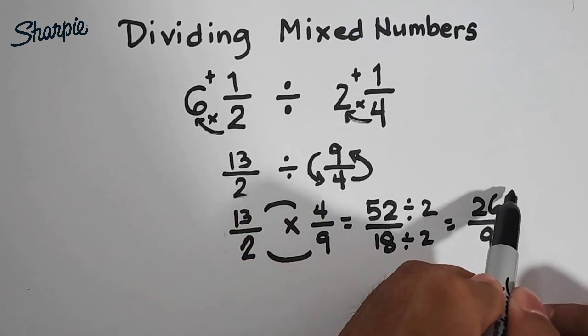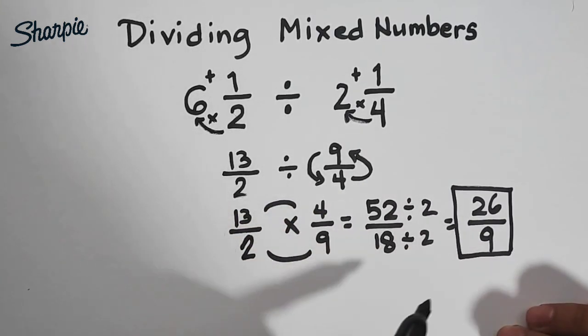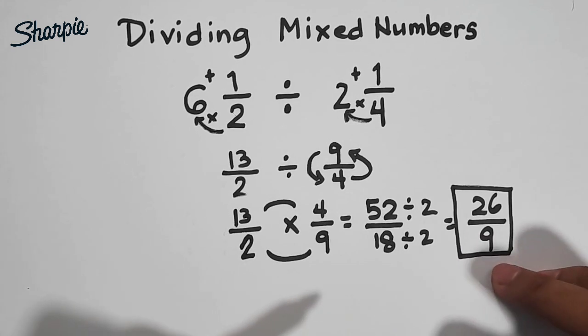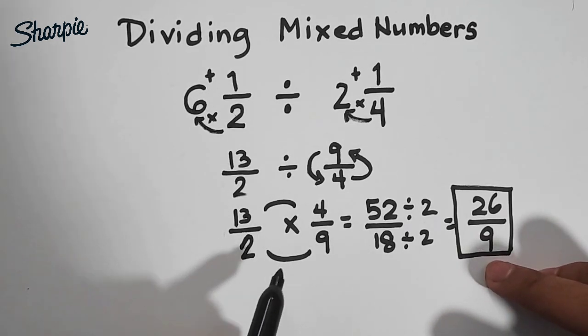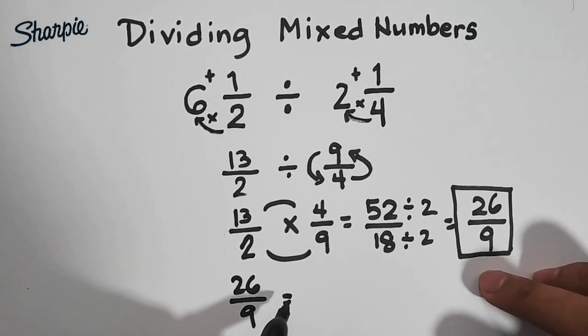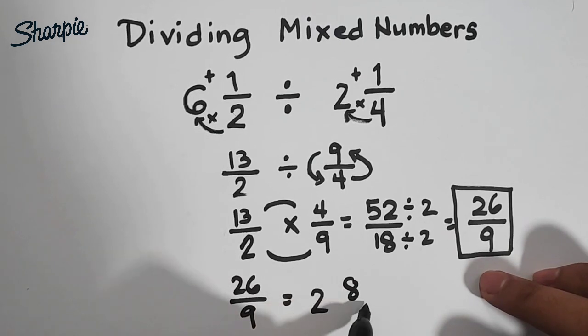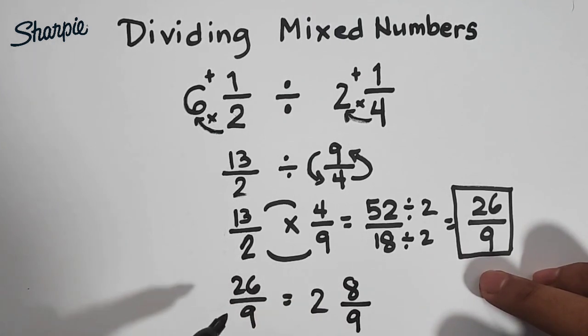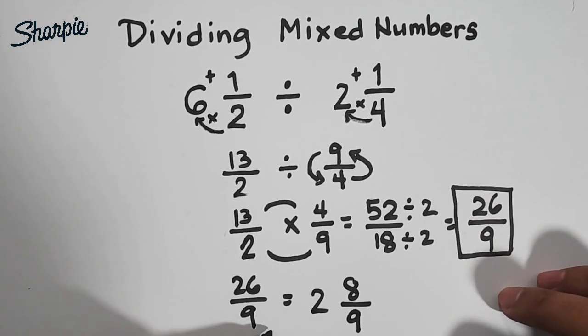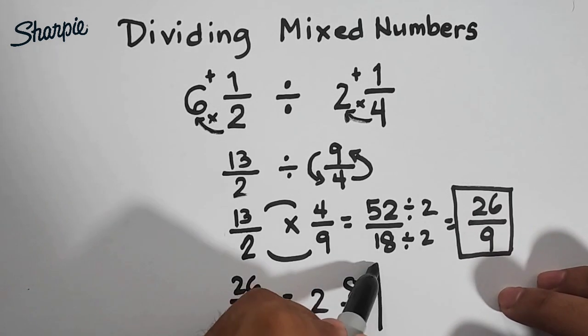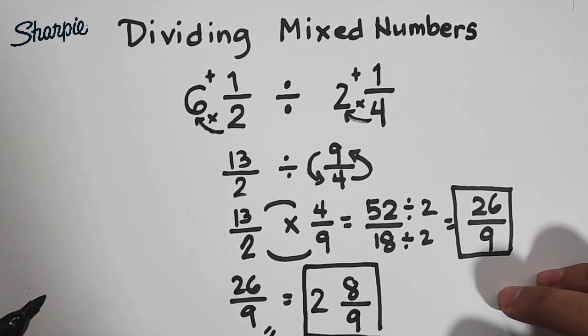So we can accept this as an answer. But some of the teachers want this kind of improper fraction to be converted into a mixed number. So let's convert this. We have 26 over 9. And the equivalent mixed number of 26 over 9 is equal to 2. So there are 2 9's in 26 and the remainder is 8. Then copy your denominator which is 9. So our final answer is either 26 over 9 or the mixed number 2 and 8 over 9.